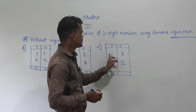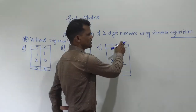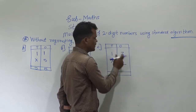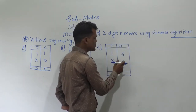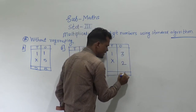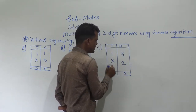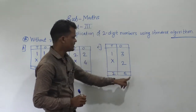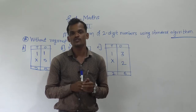Next example: 13 multiplied by 2. First multiply the ones place digit by 2. 3 by 2 — that means 2 threes are 6. Write 6 at the ones place, and 2 ones are 2. So, 26 comes as the product.